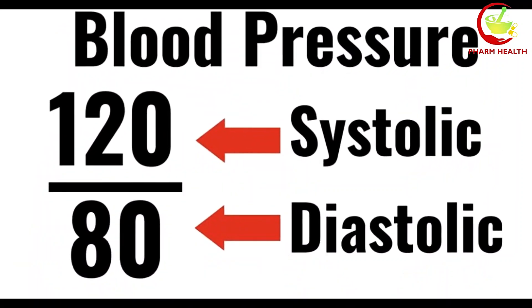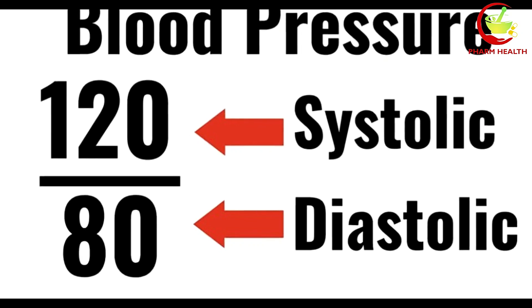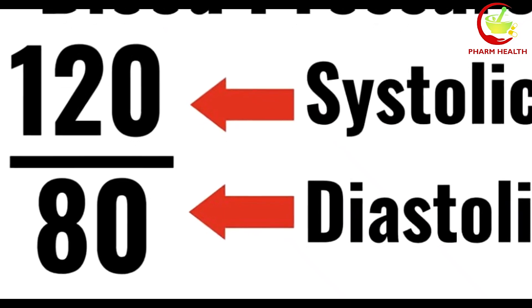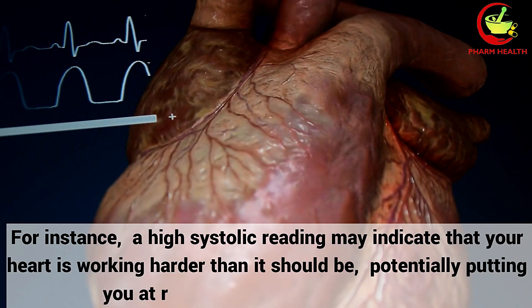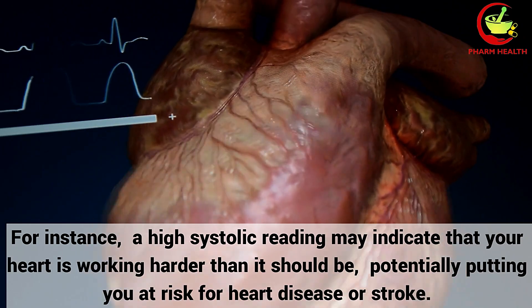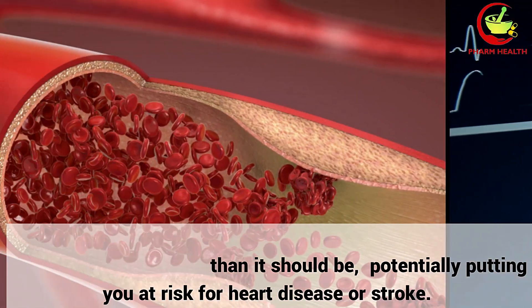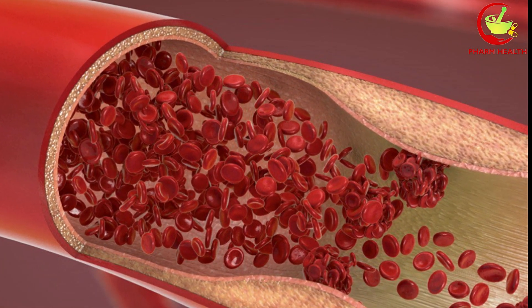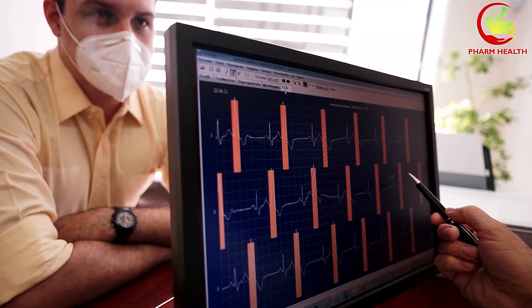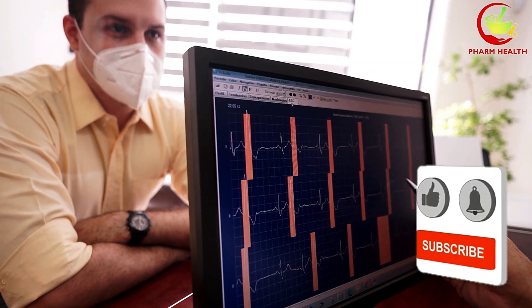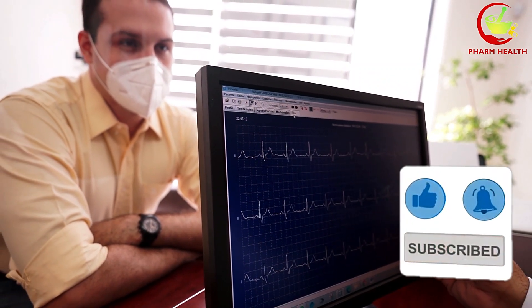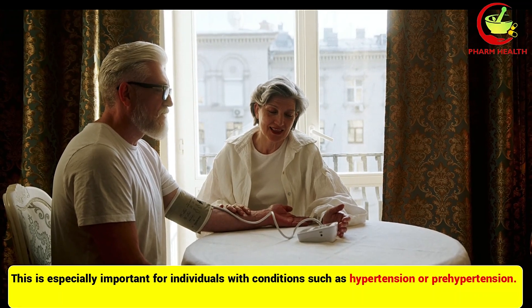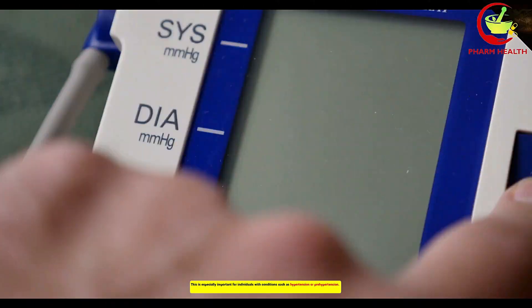Both numbers are equally important. While many people may focus solely on the systolic reading, both readings provide valuable information about your overall cardiovascular health. A high systolic reading may indicate that your heart is working harder than it should, putting you at risk for heart disease or stroke. A high diastolic reading may indicate that your arteries are stiff and not relaxing properly between beats. Tracking both readings over time provides a more comprehensive picture of cardiovascular health and can help identify trends that may require further attention, especially for individuals with hypertension or pre-hypertension.